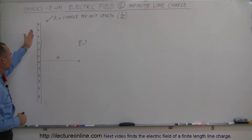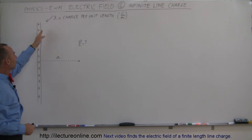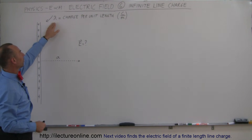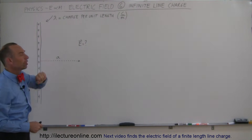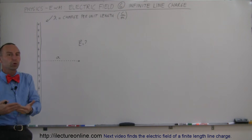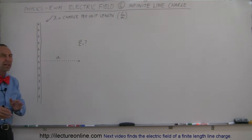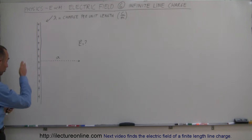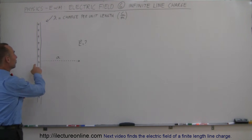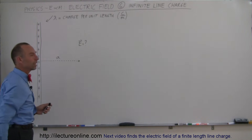Now, the charge on this line has what we call a linear charge density — charge per unit length in terms of coulombs per meter. So a certain number of coulombs, probably micro-coulombs or something like that, but a certain amount of charge per unit length. We're distance A away from it and want to know what the electric field is at that location.